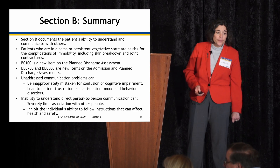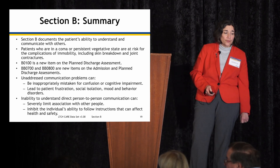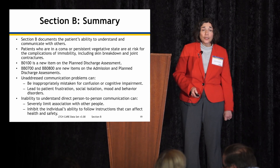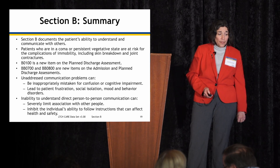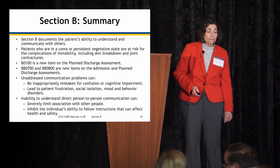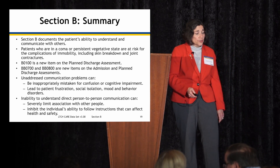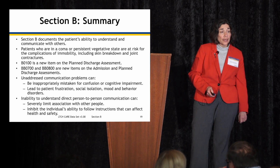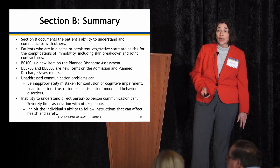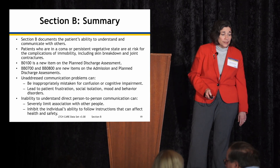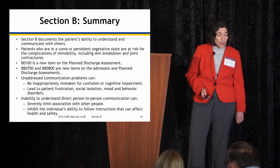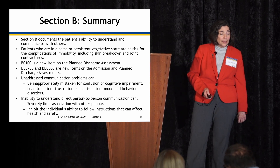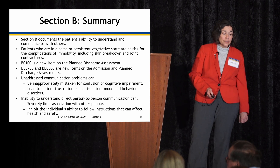In summary, Section B documents the patient's ability to understand and communicate with others. Patients in a coma or persistent vegetative state are at risk for complications of immobility, including skin breakdown and joint contractures. BB0100 is a new item on the planned discharge assessment; BB0700 and BB0800 are new items on the admission and planned discharge assessments. Unaddressed communication problems can be mistaken for confusion or cognitive impairment and lead to patient frustration, social isolation, and mood and behavior disorders. Inability to understand communication can severely limit association with others and inhibit the ability to follow instructions affecting health and safety.